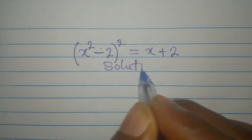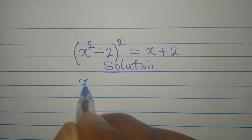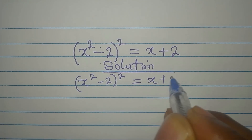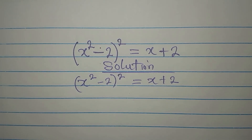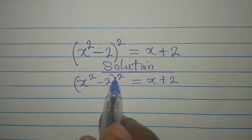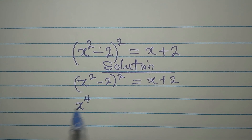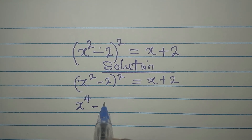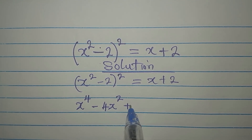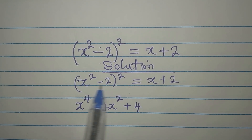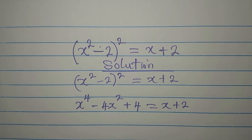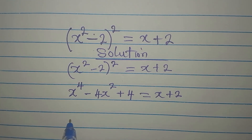Hi everyone, let's solve x squared minus 2 squared equals x plus 2. The first step is to expand what we have here. The expansion gives us x to the power of 4 minus 4x squared plus 2 squared, which is 4. The expansion of the right side will give us x plus 2.